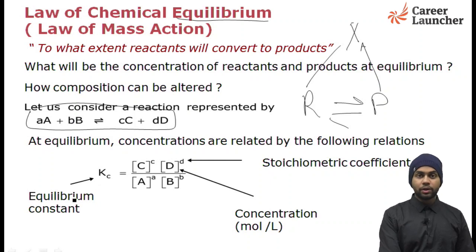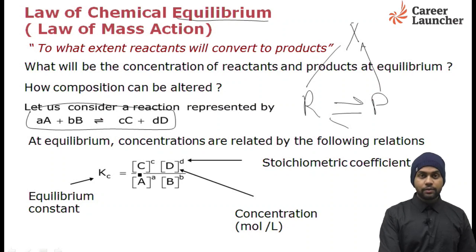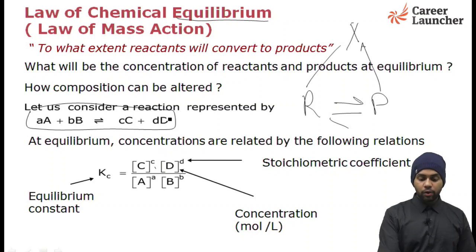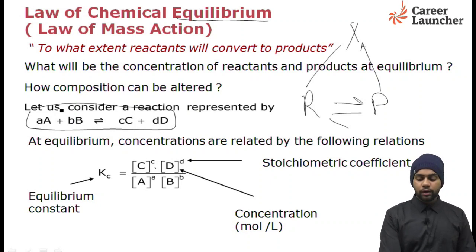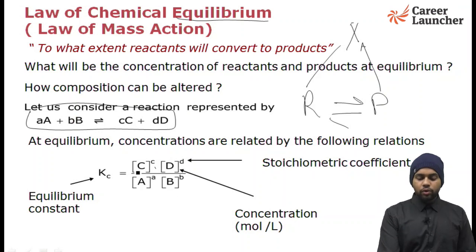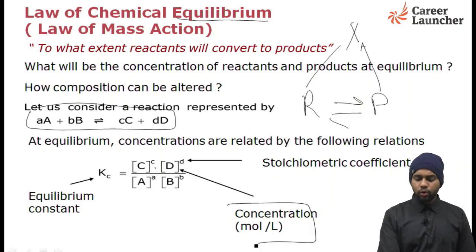This is Kc — Kc is known as the equilibrium constant. It is given as the concentration of product C raised to the power of its stoichiometric coefficient (small c), multiplied by concentration of D raised to the power of its stoichiometric coefficient, divided by the concentration of reactant A and concentration of B each raised to their respective stoichiometric coefficients. The units must be consistent — if it is moles per litre, then all concentrations are in moles per litre, and from that we determine the unit of Kc.